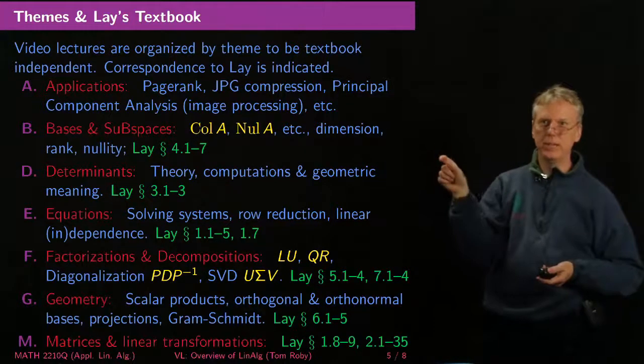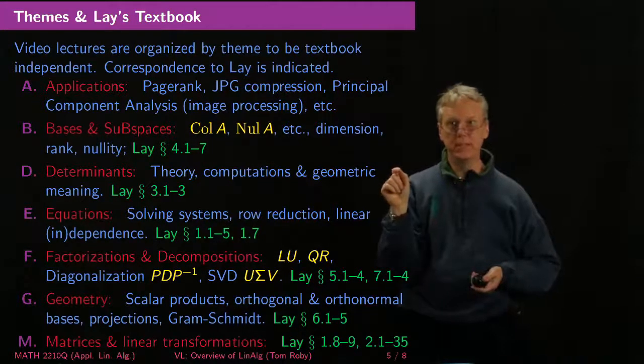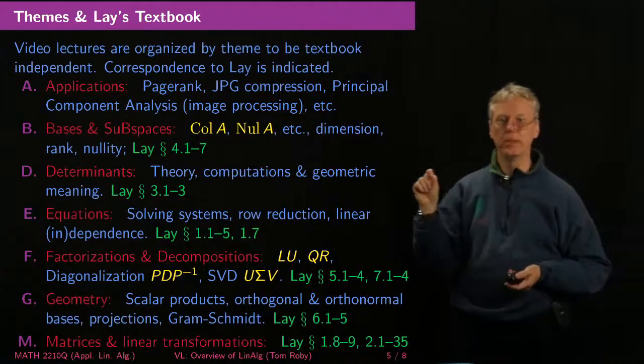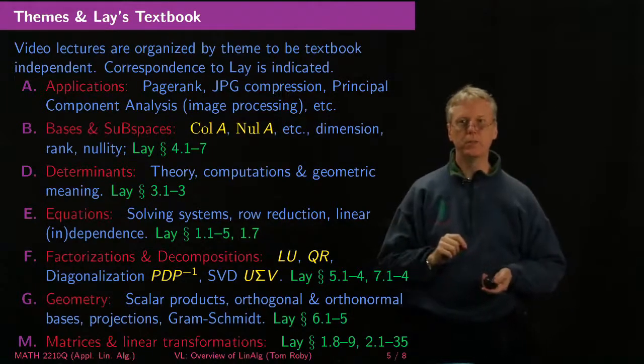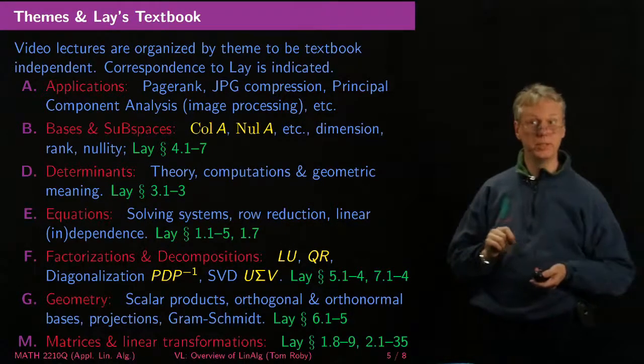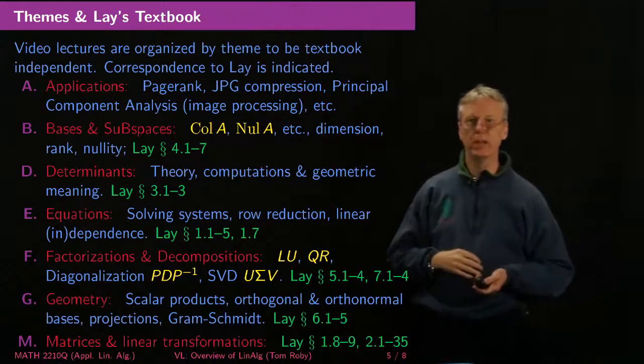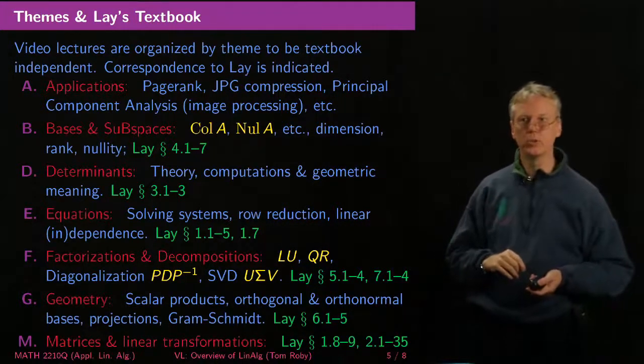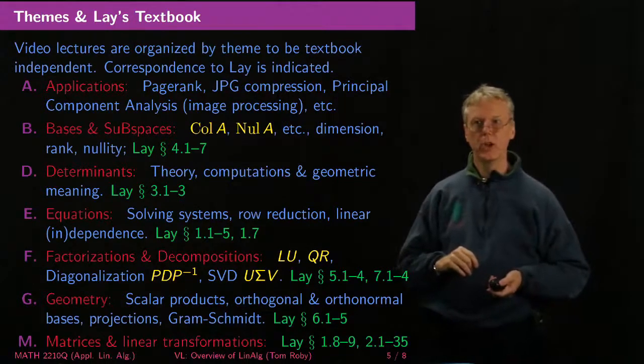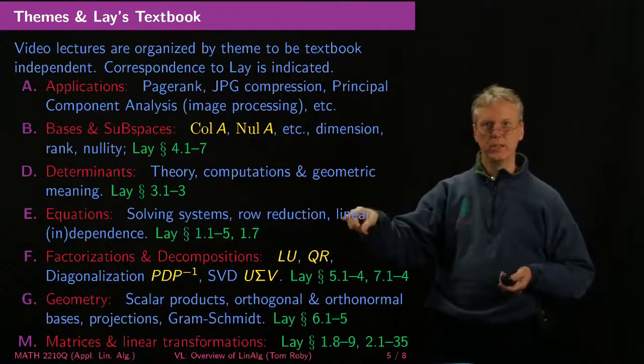So A is for applications, B is for bases and subspaces, D is for determinants, E is for equations, F is for factorization and decompositions, G is for geometry, M is for matrices and linear transformations. The path of the course will be starting with the equations section, we'll move into matrices and linear transformations, understanding these transformations that I've been telling you about.